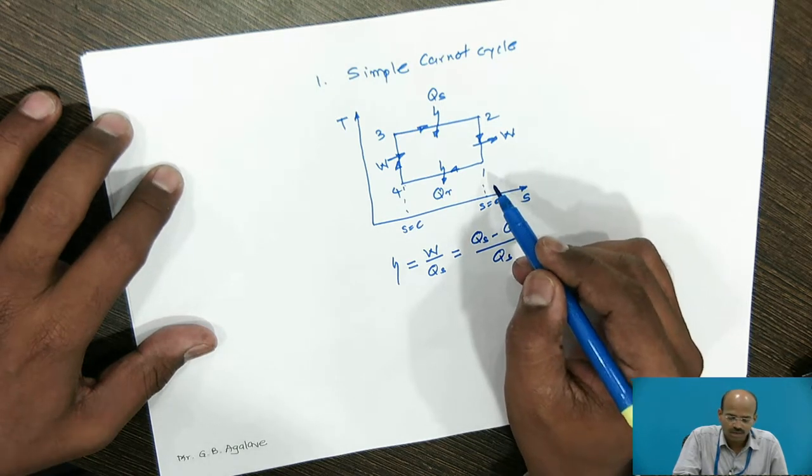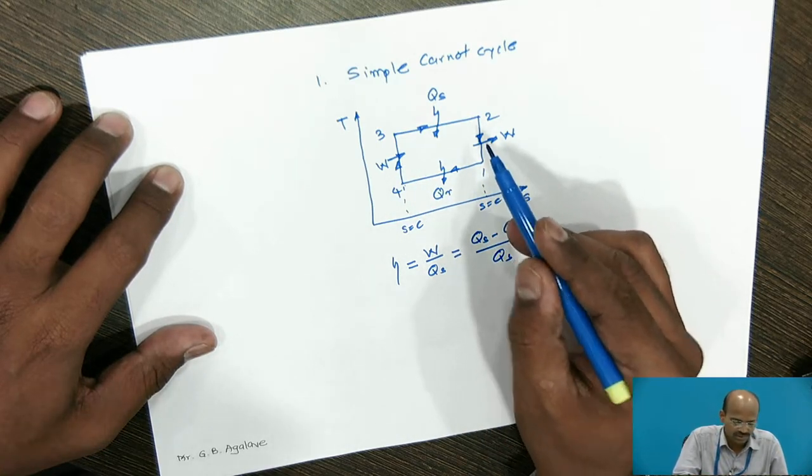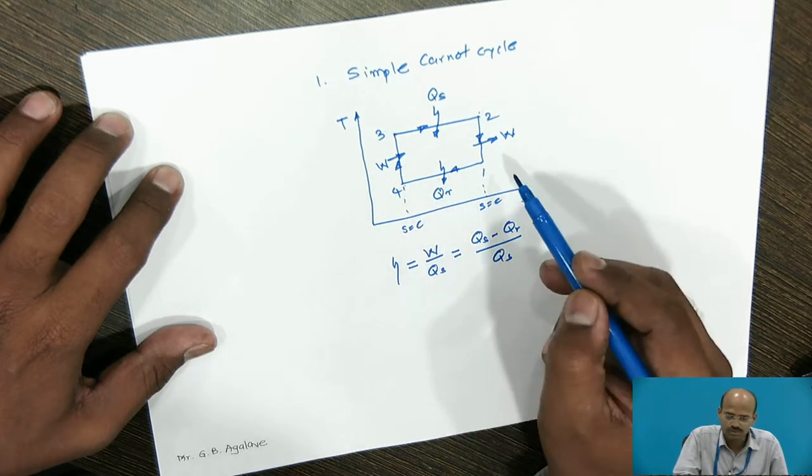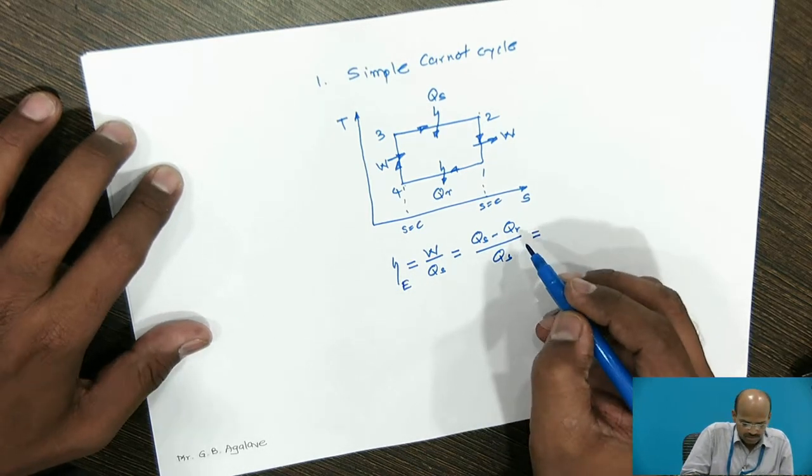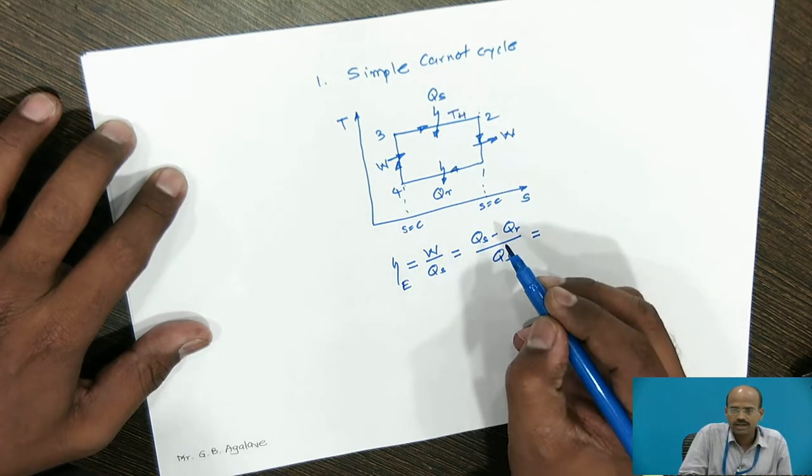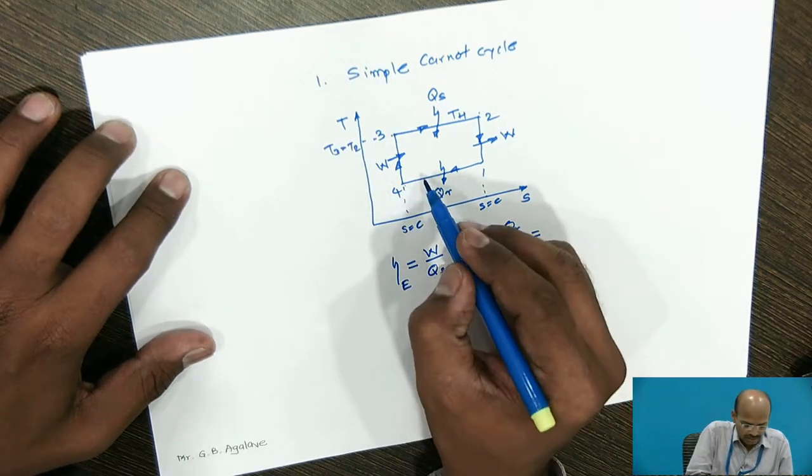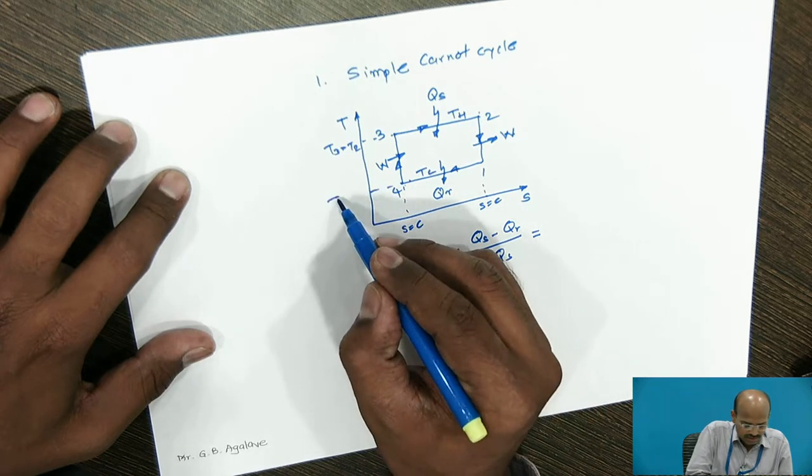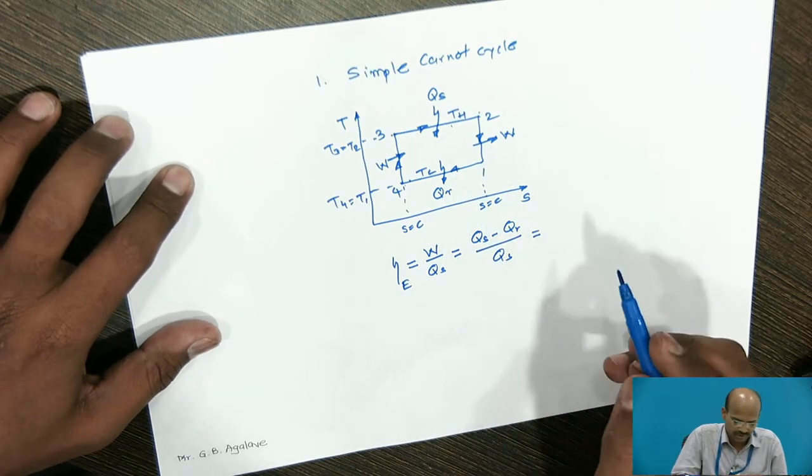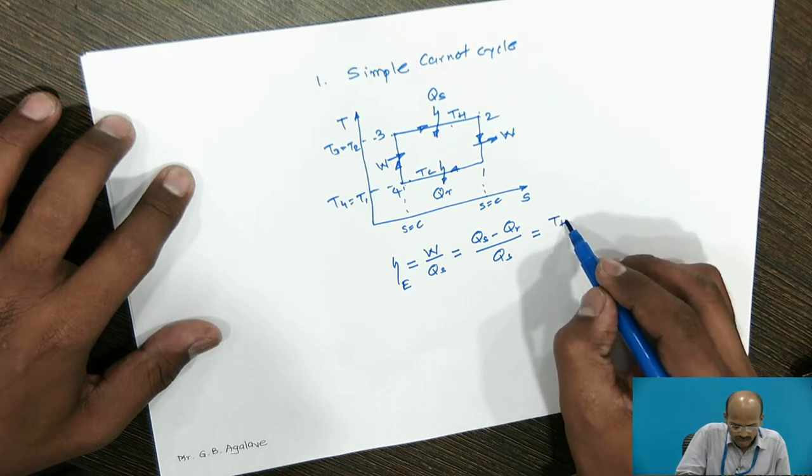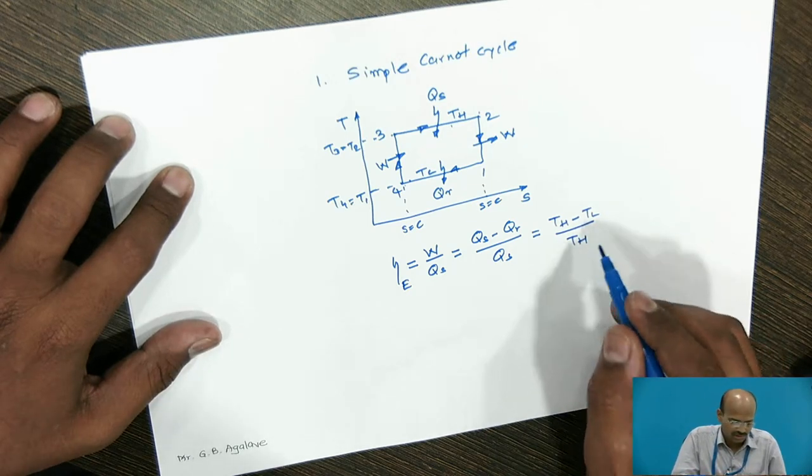We will see after this simple reverse Carnot cycle, for that cycle I have written 1, 2, 3, 4 notations. You can change the notations. The efficiency of the Carnot engine will be equal to... For this I will take this as the high temperature source because T3 is equal to T2 and this has low temperature sink as T4 is equal to T1. Both these processes are isothermal processes. This can be represented by high temperature minus low temperature divided by high temperature. This is the simple Carnot cycle.